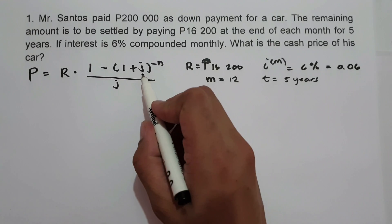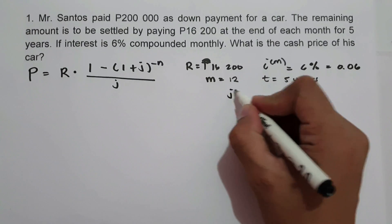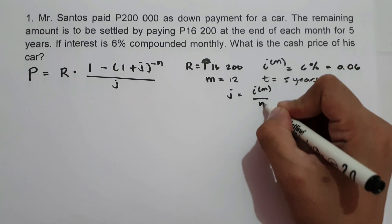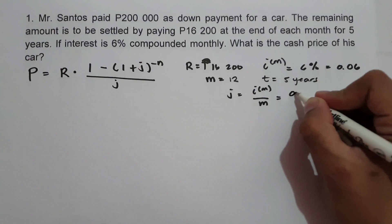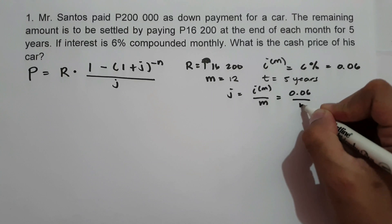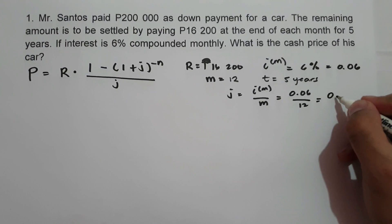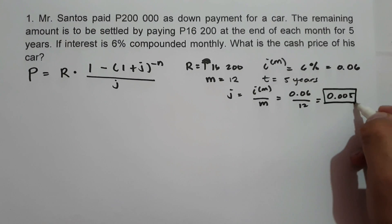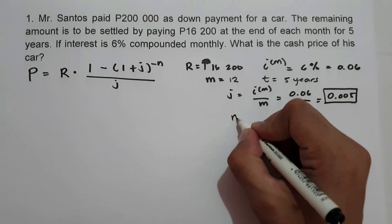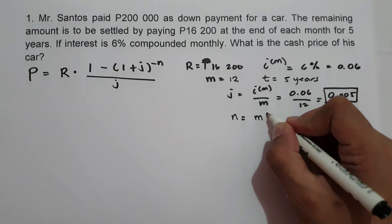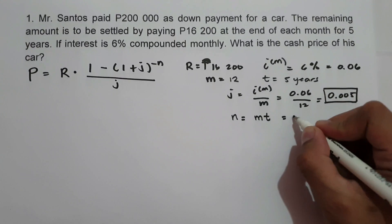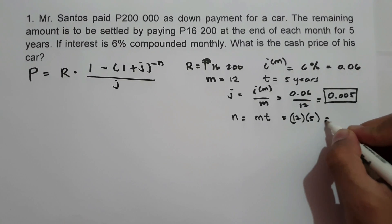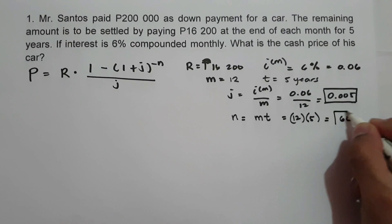First, let us determine the value of J. Using I^M over M, that is 0.06 divided by 12, which gives J equals 0.005. To find the value of N, we multiply M times T, that is 12 times 5, which gives N equals 60.